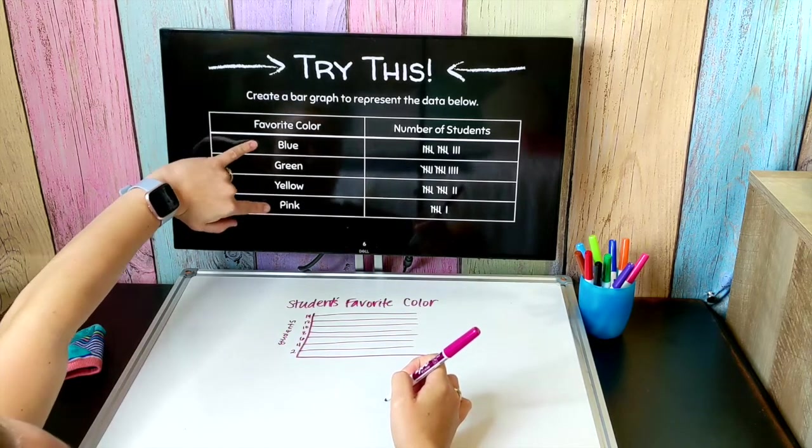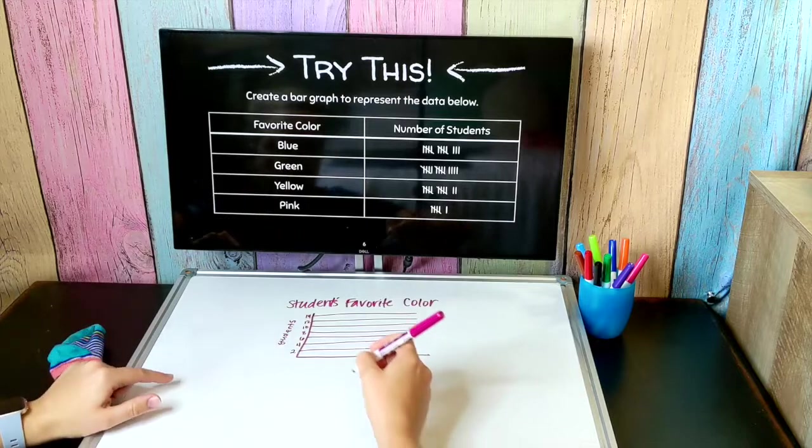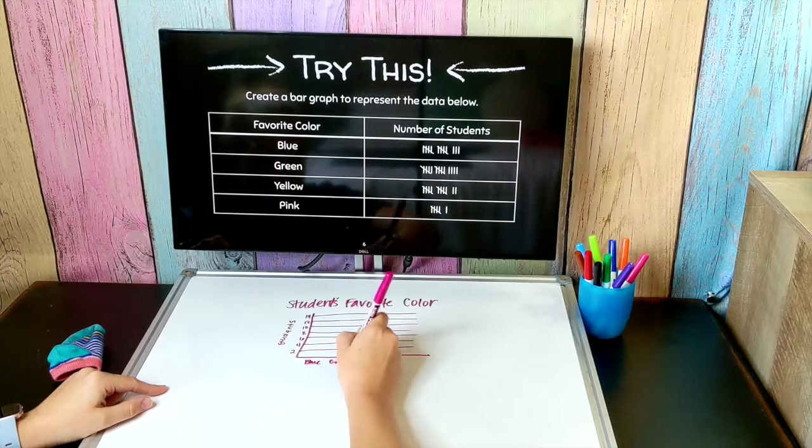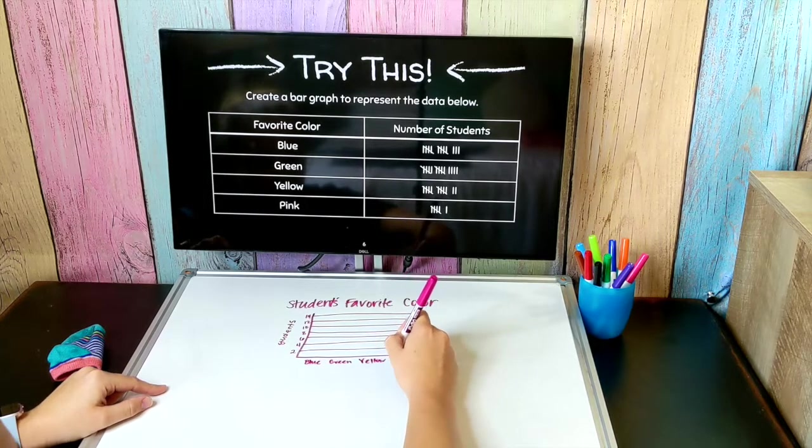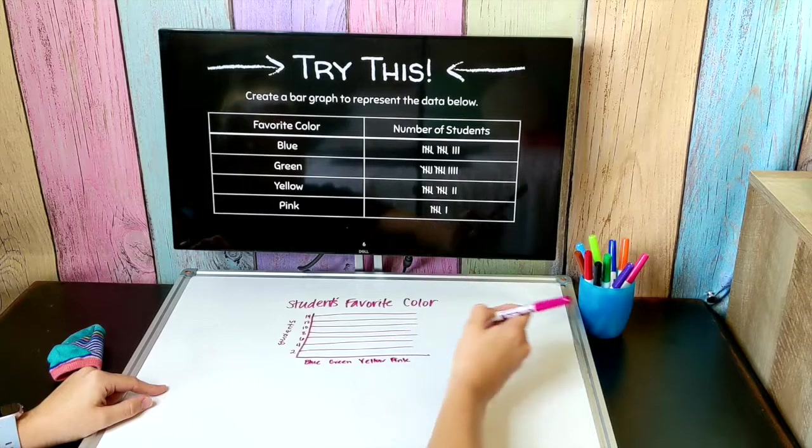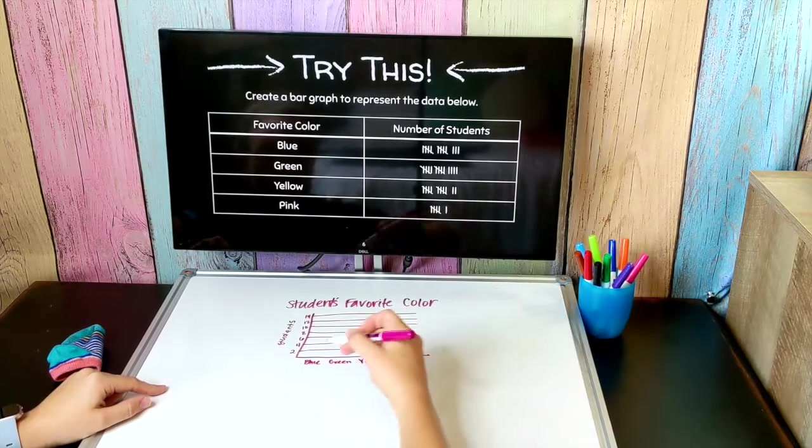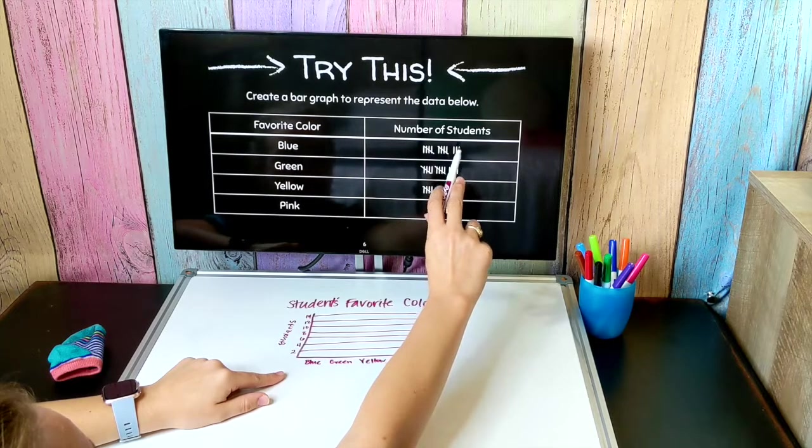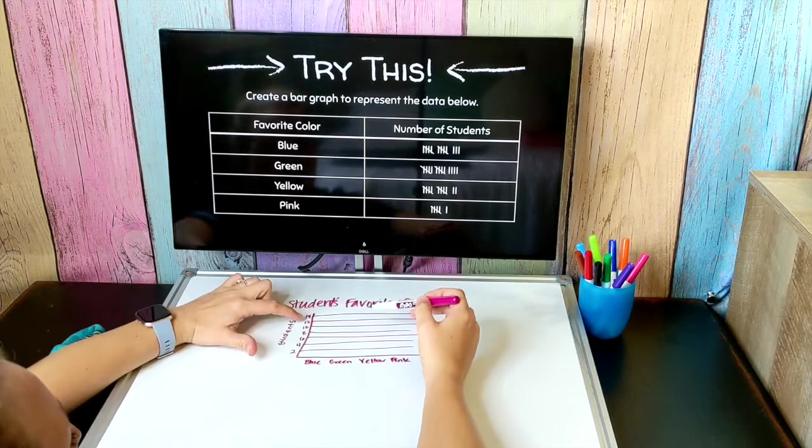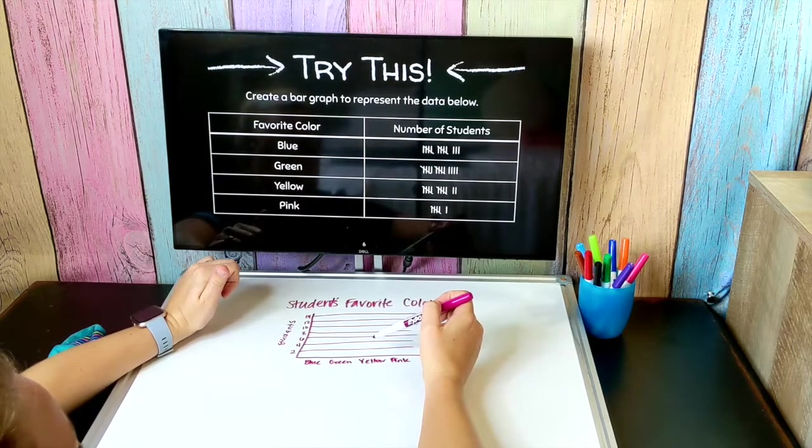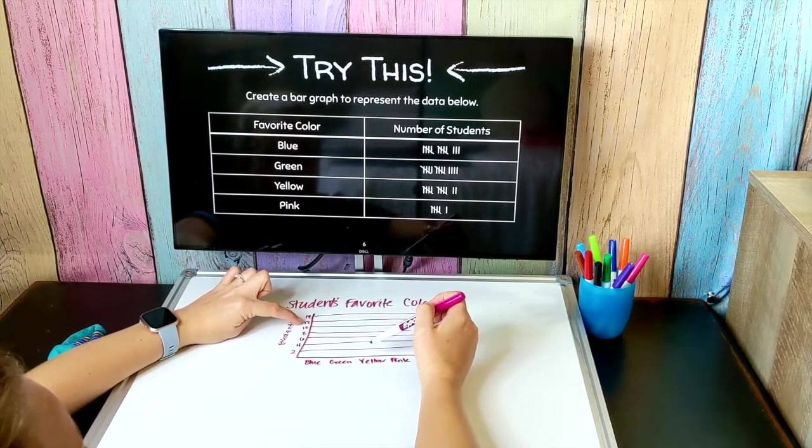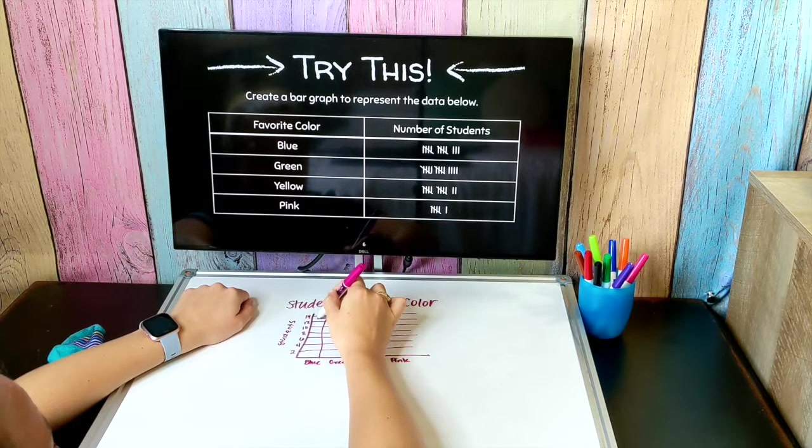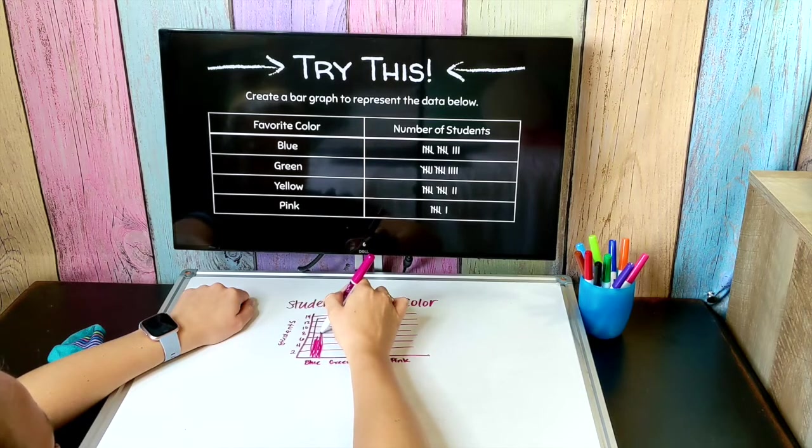And the colors that I'm going to show on my graph are blue, green, yellow, and pink. So I've got blue, green, yellow, and pink. For blue I have 5, 10, 13 students. Now I don't have 13 as one of my lines but I do know 13 is right between 12 and 14, so I can draw my bar there. Green has 5, 10, 14, so I'm going to draw that bar all the way up to 14.